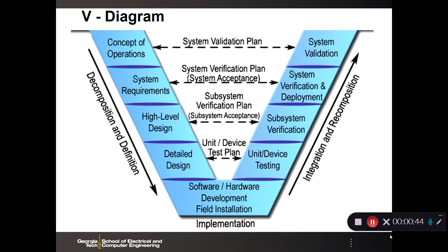So here is our typical V-diagram that you've seen several times. In the upper left, we talk to the customer about concepts of operation, trying to understand what the customer wants. Then we start generating requirements for the system, the subsystems, the unit and device level. And then we go into the implementation phase for both software and hardware.